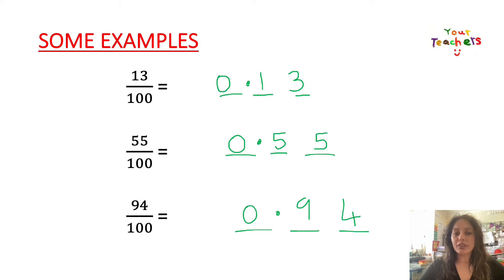Again, we've put that 55 at the end and the 0 at the front. And over here, 94 out of 100 is 94 at the end. Decimal point here and we've got a 0. Let's see if you can do the next set.